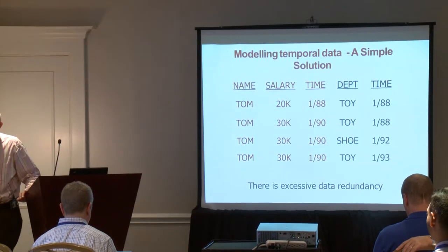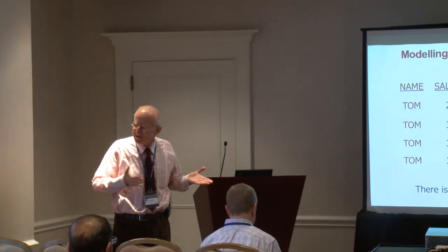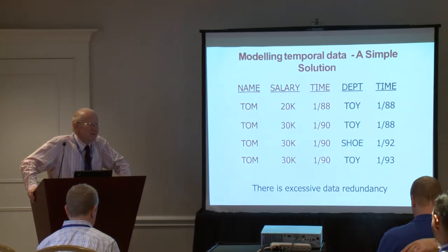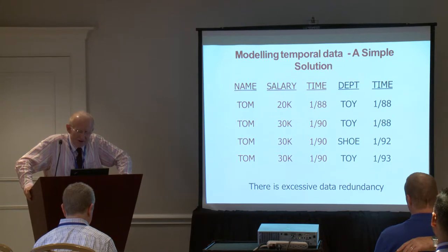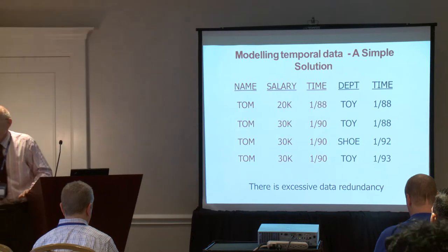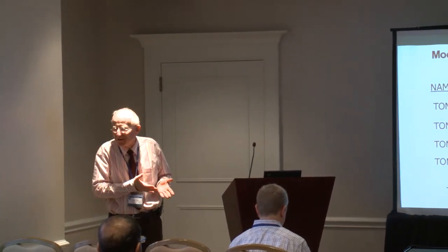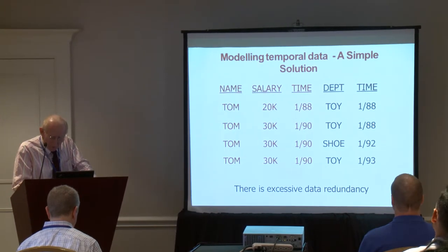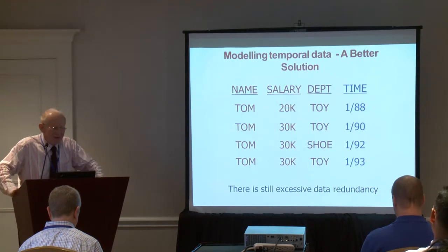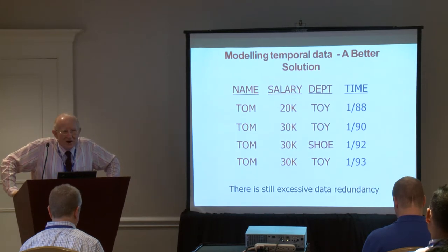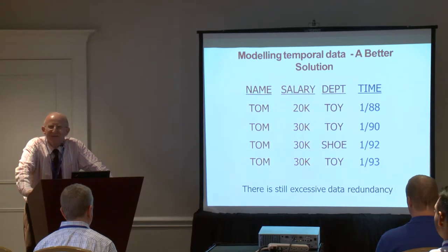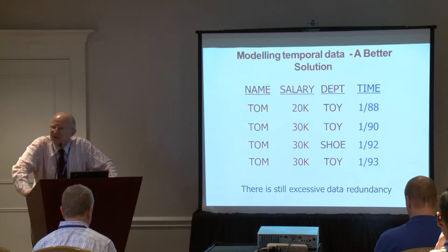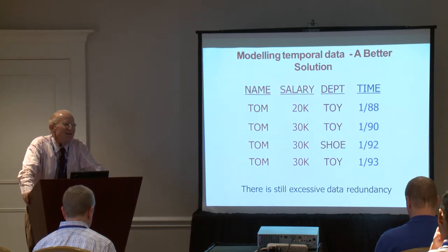How can I model temporal data in the relational model? A relation has columns — name, salary, with a time for salary, and a department attribute with a time for department. Intuitively this should work, but it is not a good solution — it creates excessive data redundancy and querying would not be easy. We can improve it by combining the time of salary and department into one single column. This is better, but still not good unless salary and department change at exactly the same time.